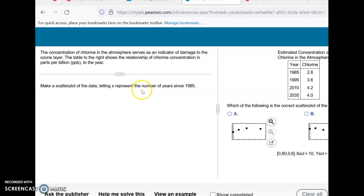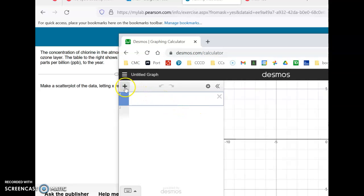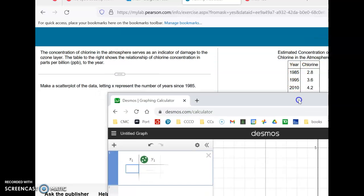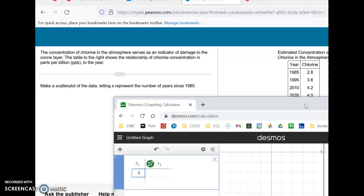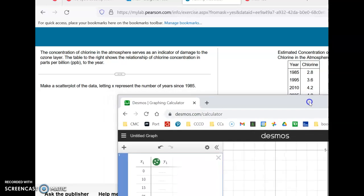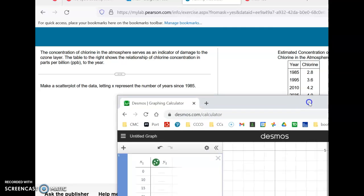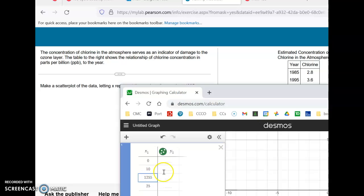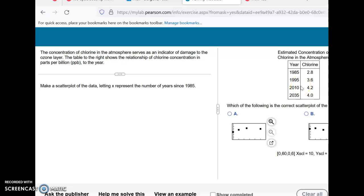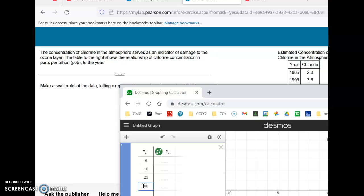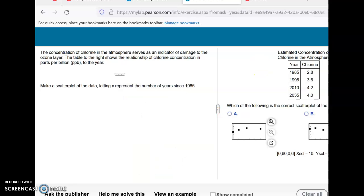Let's make a scatterplot, letting X represent the number of years since 1985. So we're going to add a table, and then I'm going to recreate this table. So 0, 10, 15, 25. I'm doing that wrong. I'm going year to year. Let's try that again. That would be, I have to add 10 to that first one, so it's going to be 25, and then 25 more years should be 50. And then 2.8 chlorine value, and then 3.6, and then 4.2, and 4.0.